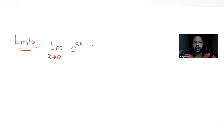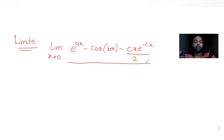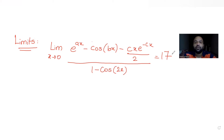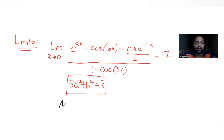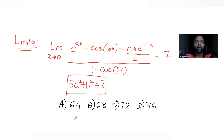the question tells us that the limit as x tends to 0 of e raised to ax minus cos(bx) minus cx·e raised to minus cx/2, the whole thing upon 1 minus cos(2x), is equal to 17. We have been asked to find the value of 5a² + b². There are four options: 64, 68, 72, and 76. We need to figure out which one is the correct answer.